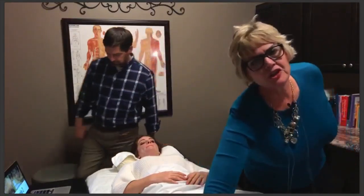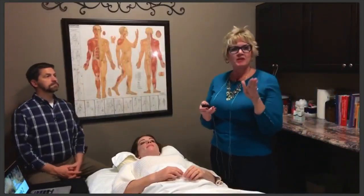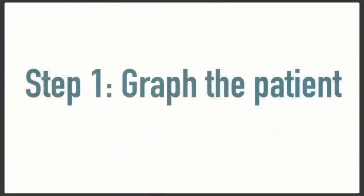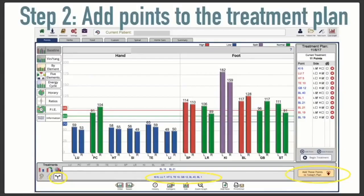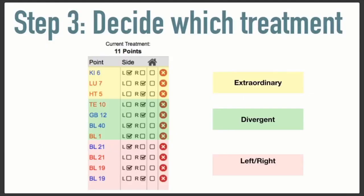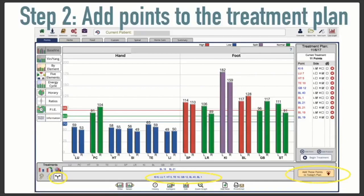The next example I'm going to do — I won't be doing the full graph, but I'm going to walk you through. In this example, you would graph the patient. Here we have a very messy graph, and you would put the divergent points into the treatment. Again, we have extraordinary, divergent, and left-right. If you'll notice something different about this particular graph, there are only three extraordinary points listed — and there's a reason for that. Notice how high the kidney channel is on that graph — it is extremely high, there's a lot of extra energy in the kidney channel.